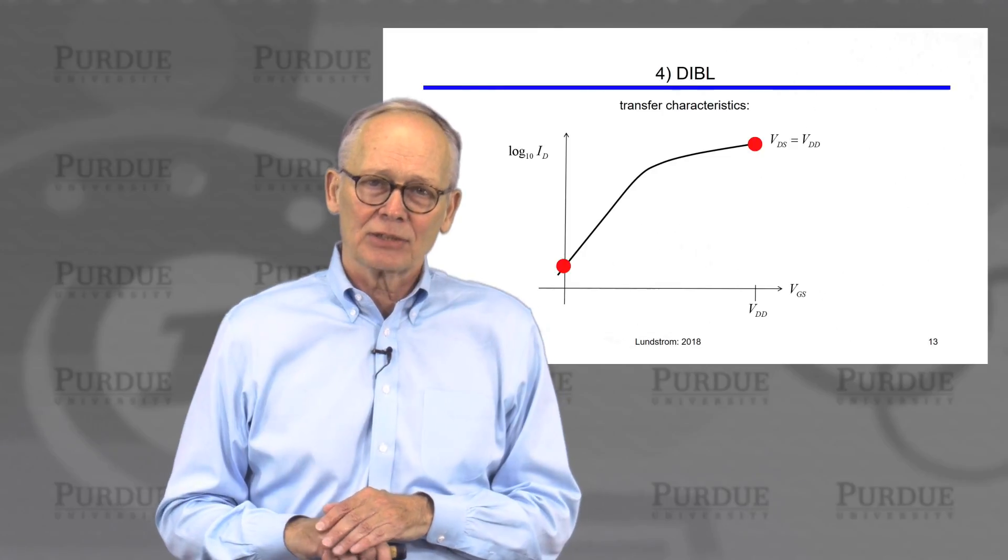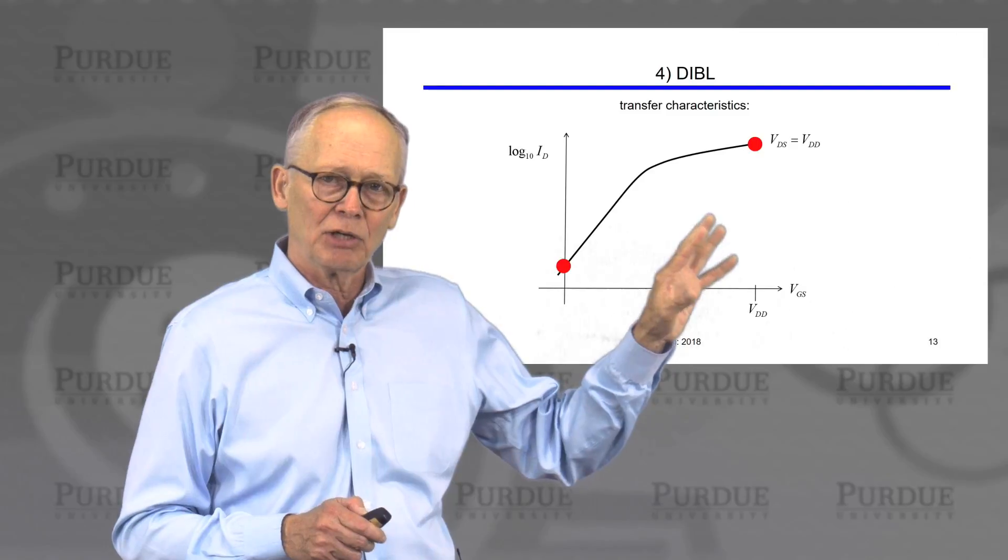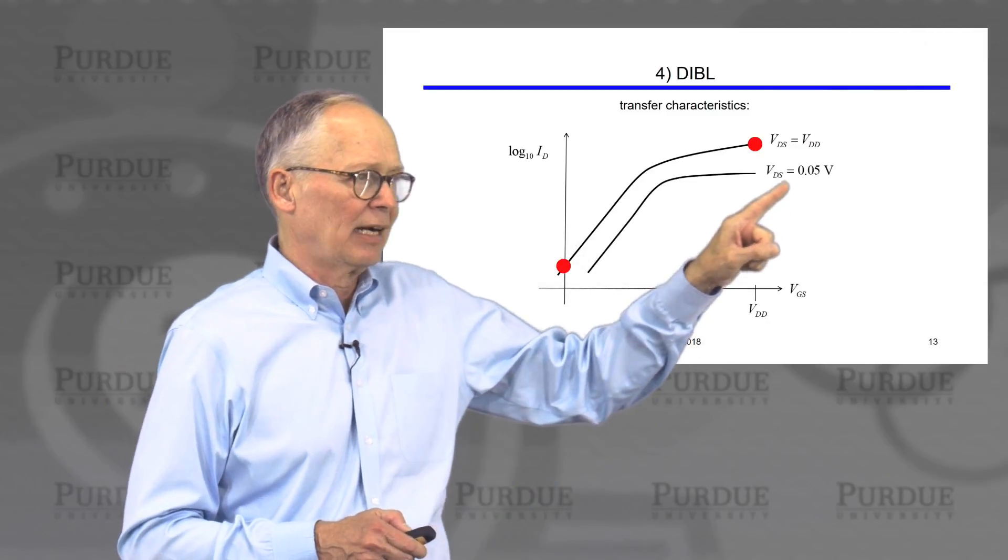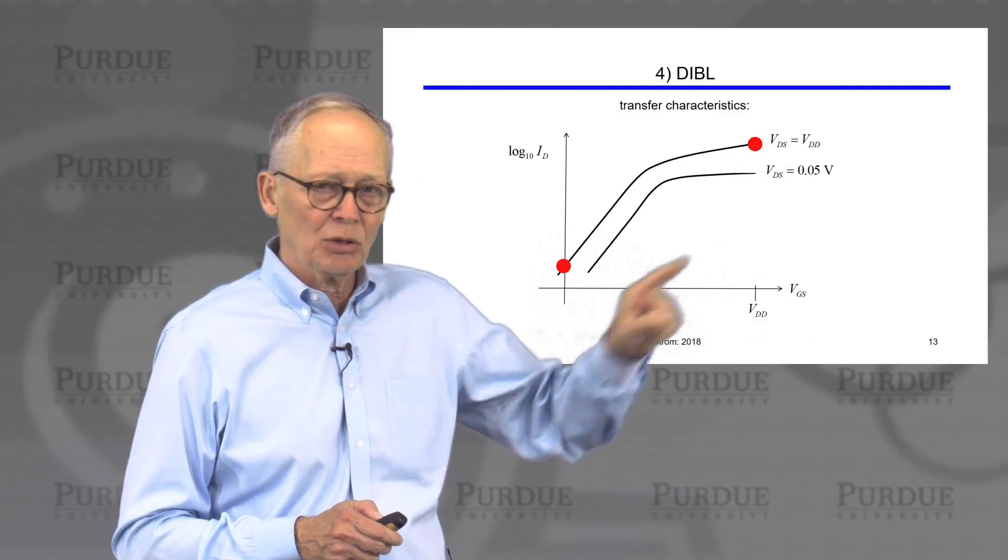The fourth metric is called DIBL. So the way we measure DIBL is again we look at the transfer characteristic on a logarithmic plot. We look at it at a high gate voltage. We look at, I'm sorry, we look at a high drain voltage. We look at it at a low drain voltage. The two curves are translated parallel to each other.